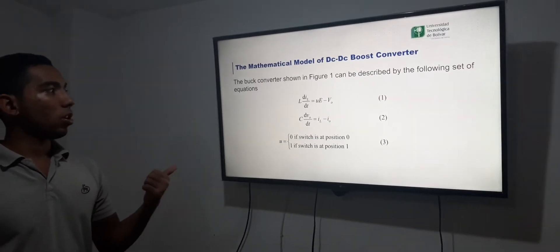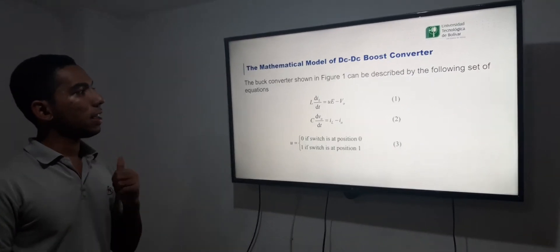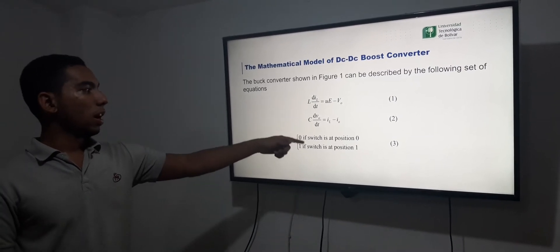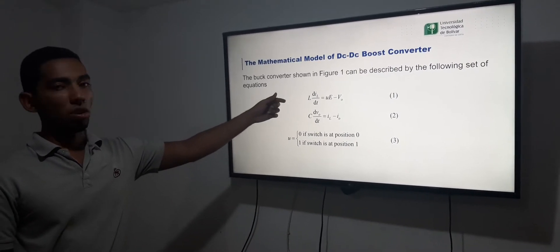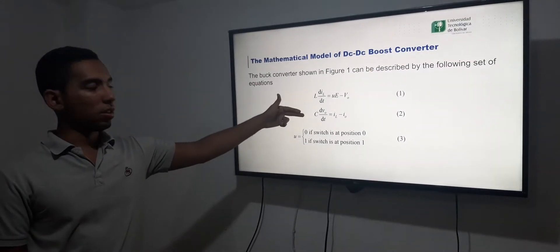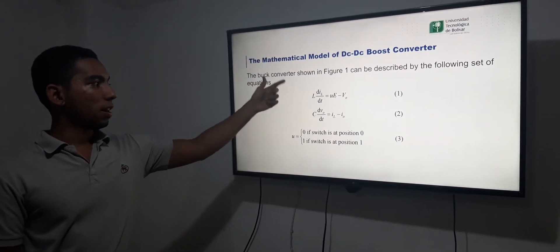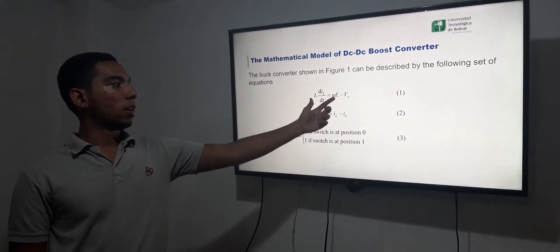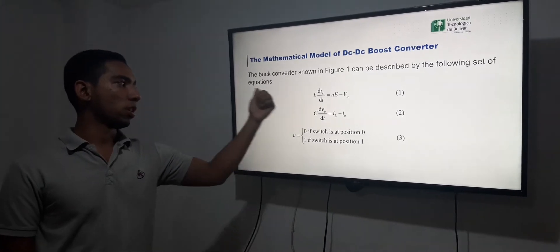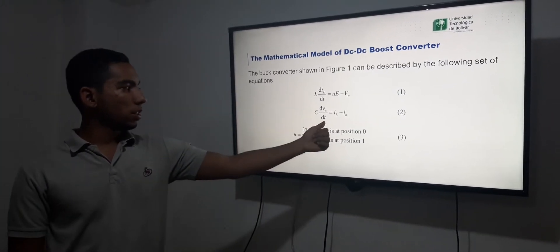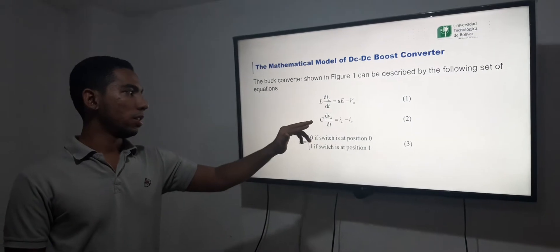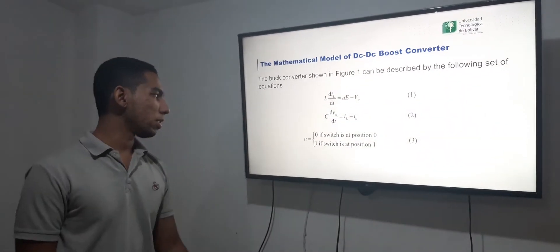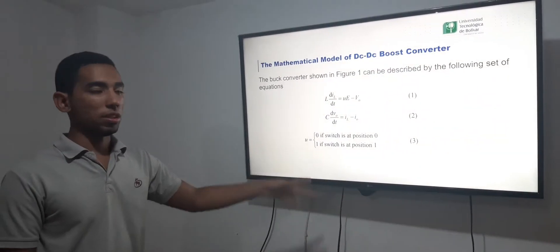The buck converter shown in the past slide can be described by the following set of equations. Here we have the inductor equations and the capacitor equations given by the state of the transistors and the output voltage and the source voltage. In the capacitor, the inductor current and the output current and the two states of the transistor.